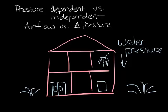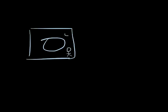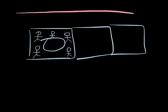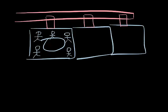Pressure dependent VAV boxes in an HVAC system work in a similar way. Going back to the conference room example from our first podcast: if the conference room goes from empty to full, it'll suddenly need a lot more air and the damper in the conference room box will open. In a pressure dependent system, if there are other offices on the same duct work, if the airflow in the conference room goes up, then the airflow in the two offices will go down because they are pressure dependent.